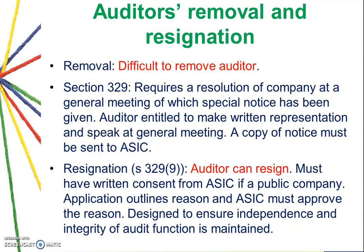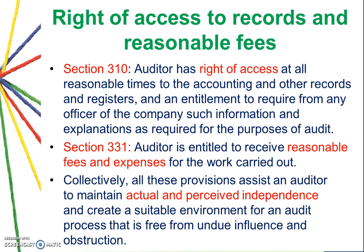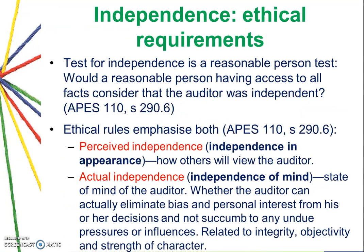Regarding auditor removal and resignation — it is difficult to remove the auditor. Even if the client disagrees with the auditor, they cannot simply remove them. However, the auditor can resign if they think it is inappropriate to continue, in order to ensure their independence and integrity. An auditor can resign by sending a written consent letter to ASIC if the client is a public company. The auditor also has a right of access to records and must be paid a reasonable fee — the client cannot dispute the auditor's fee unreasonably.